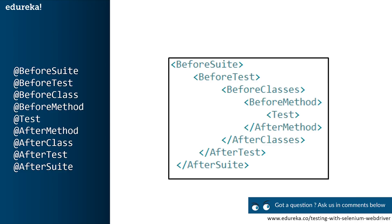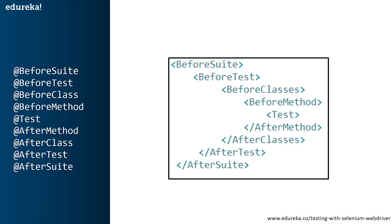Let's look at the flow of execution. First comes @BeforeSuite, then @BeforeTest, then @BeforeClass, @BeforeMethod, then @Test, and after that @AfterMethod, @AfterClass, @AfterTest, and finally @AfterSuite. This is the execution flow, and no matter how you write them — even if you jumble the order — the annotations will always execute in this same sequence.